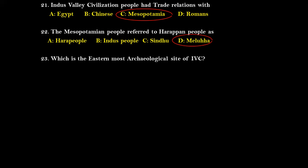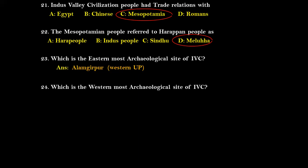Question twenty-three: Which is the easternmost archaeological site of Indus Valley Civilization? The answer is Alamgirpur, located in western Uttar Pradesh, India. Question twenty-four: Which is the westernmost site? The right answer is Sutkagendor, on the border of modern-day Pakistan and Iran.